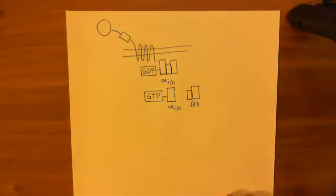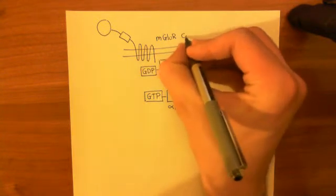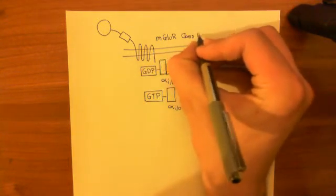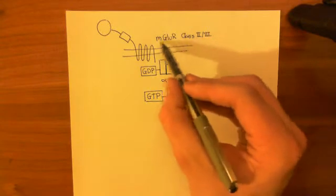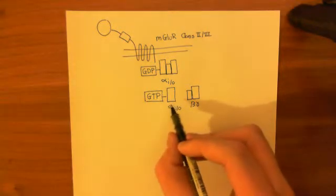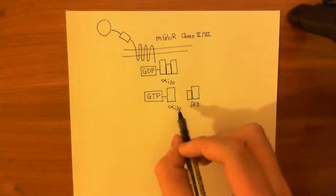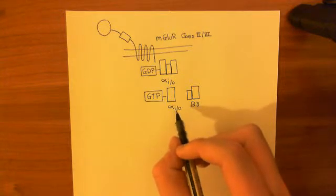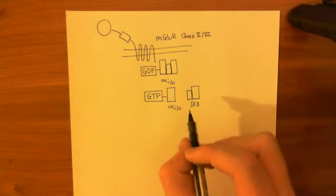So now what is the function of the alpha i slash o subunit? This is either an mGluR class 2 or class 3 receptor — so it's one of those two, not class 1, meaning not mGluR1 or mGluR5. Most people's answer to what does it do is that it inhibits adenylyl cyclases. And that is not actually true. What it does is it inhibits calcium activation of adenylyl cyclases, specifically adenylyl cyclases 1 and 8.